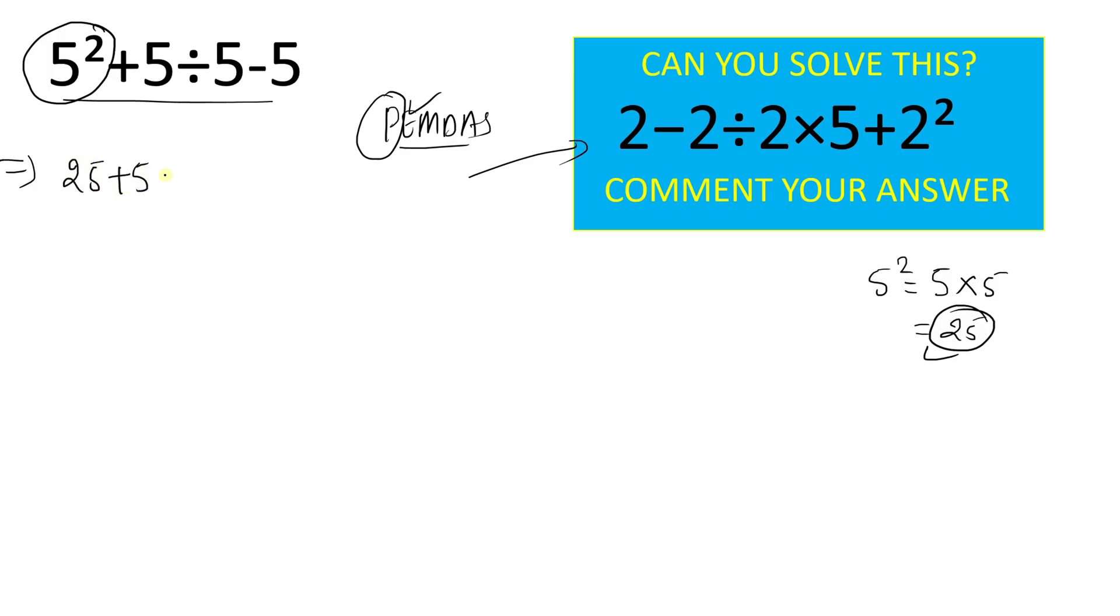25 plus 5 divided by 5 minus 5. Now here 3 operations are there: addition, division, and subtraction. And out of these 3 operations, division has the hierarchy over addition and subtraction. So first we have to divide this part which is 5 divided by 5. And this will give result 1 here. So we will rewrite our question here.